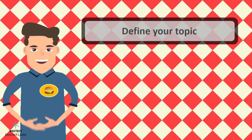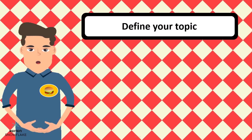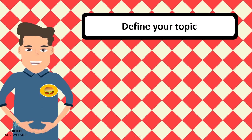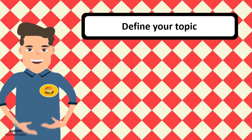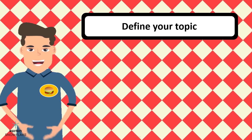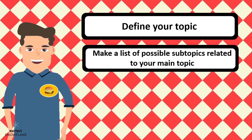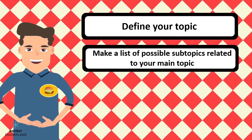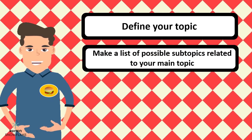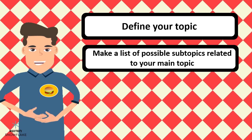First, you must define your topic — this is what your text is about. Next, you must see what subtopics you want to cover. The subtopics are the parts in which you will divide your big idea.